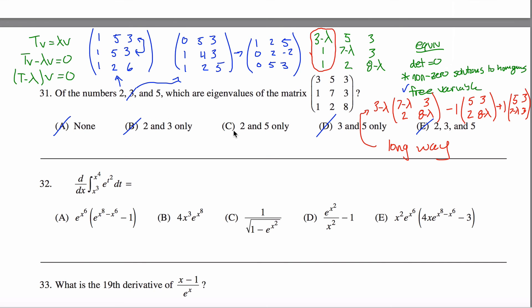So this cannot be the answer and this cannot be the answer. It looks like I figured out the answer. The answer must be C, right? 2 and 5 only. And the way you can prove that is by figuring out what happens with 5.